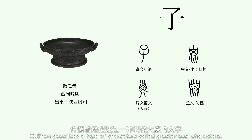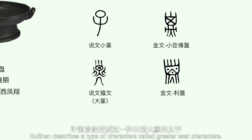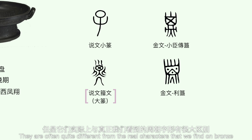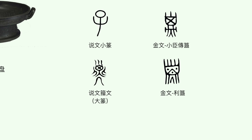Shu Shen describes a type called greater seal characters, supposed to be used during the Zhou Dynasty, but these are often quite different from the real characters we find on bronze.